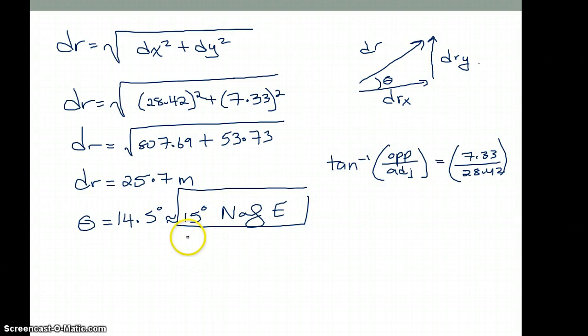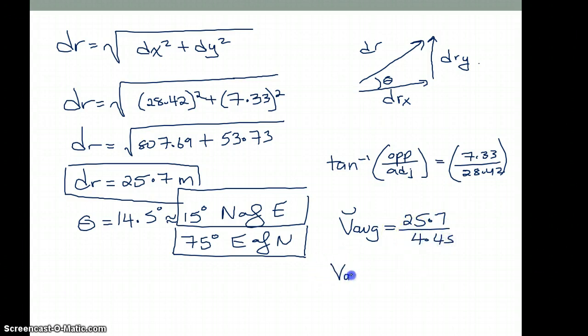So there is my theta. This is one of my directions. Of course, you could have the other direction, which is 75 degrees east of north. Both of these are correct. So there is my d resultant. Of course, I have not finished my question. My question was asking for the average velocity. So that's going to be my displacement, which is 25.7 divided by 4.4 seconds. And your V average, of course, which is a vector, is going to be 5.84 meters per second, 75 degrees east of north, or 15 degrees north of east.